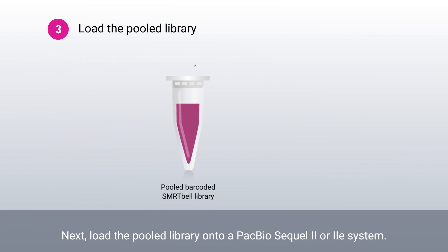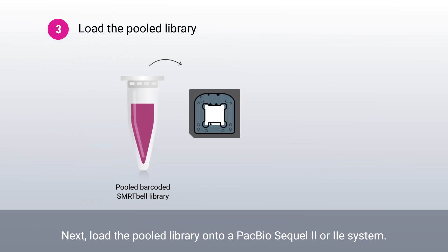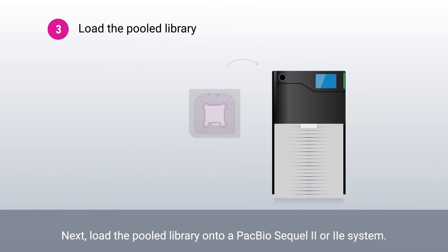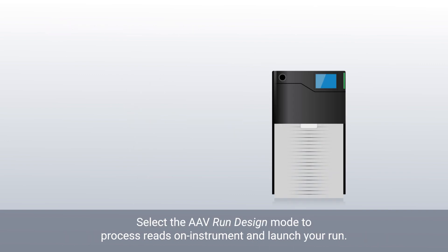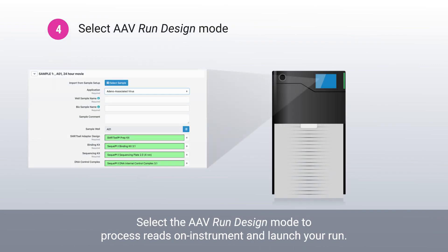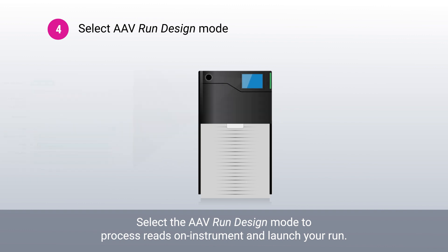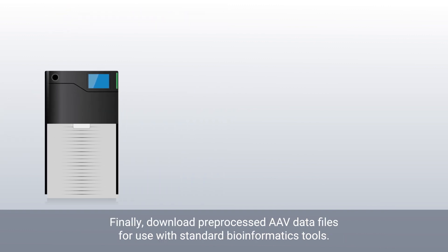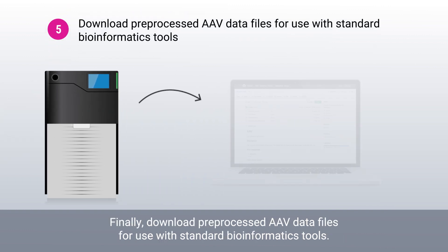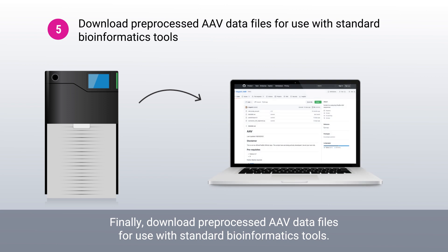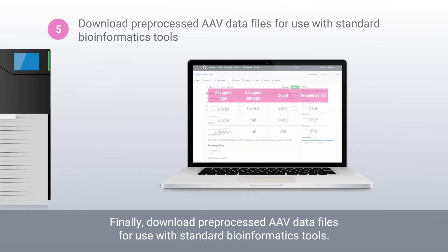Next, load the pooled library onto a PacBio SQL 2 or 2e system. Select the AAV run design mode to process reads on instrument and launch your run. Finally, download pre-processed AAV data files for use with standard bioinformatics tools.